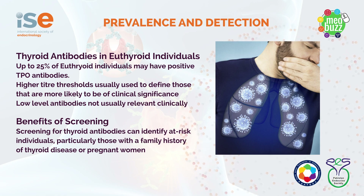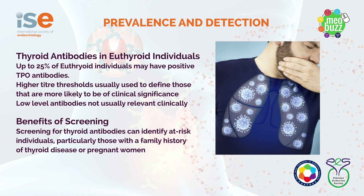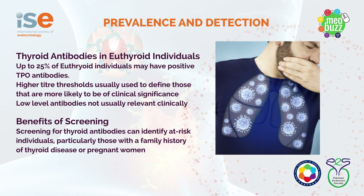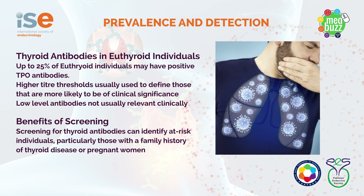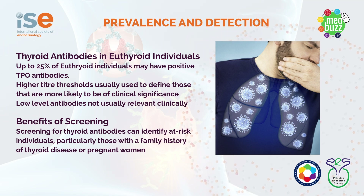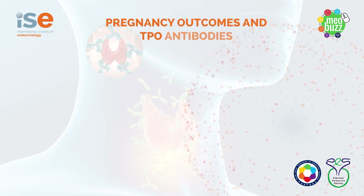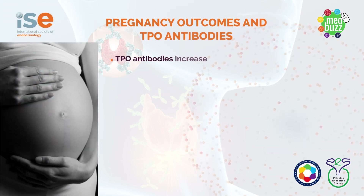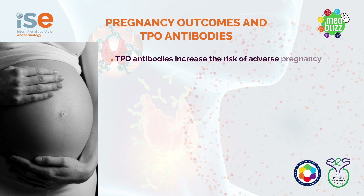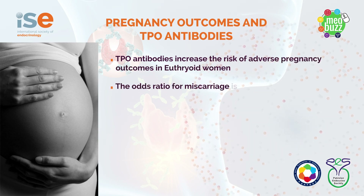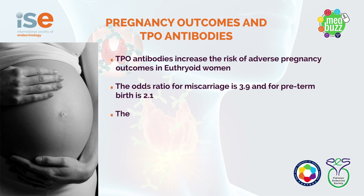Screening or testing for thyroid antibodies can identify at-risk individuals, particularly those with a family history of thyroid disease, and there can be a role in some pregnant women. It is known that in euthyroid pregnant women, the presence of TPO antibodies increases the risk of adverse pregnancy outcome, both miscarriage and preterm birth.